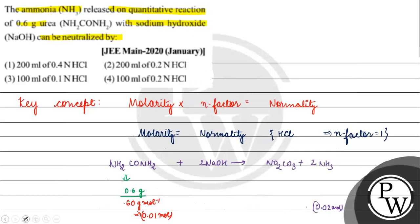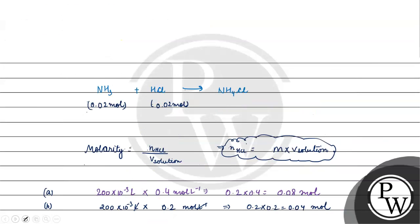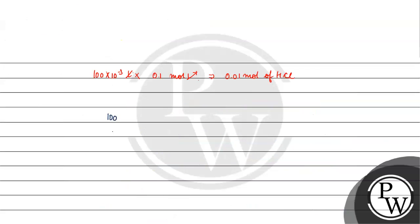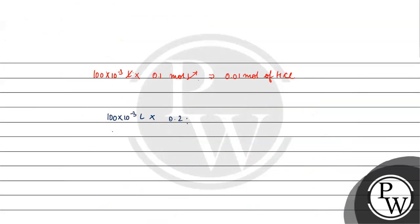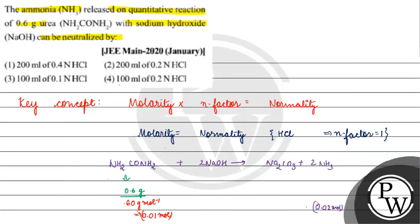Option 4 is 100 ml of 0.2 normal: 100 × 10^-3 liters × 0.2 mol per liter gives 0.1 × 0.2 = 0.02 mols of HCl, which is required. Option 4 is the correct answer for this question.